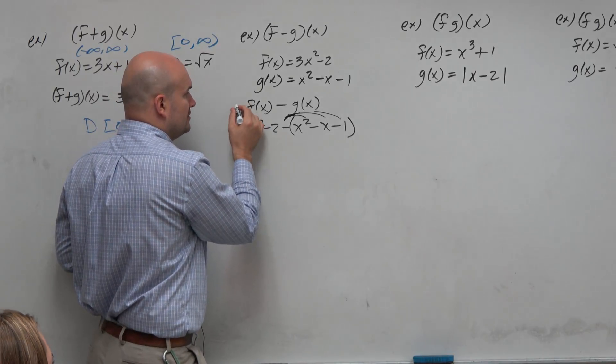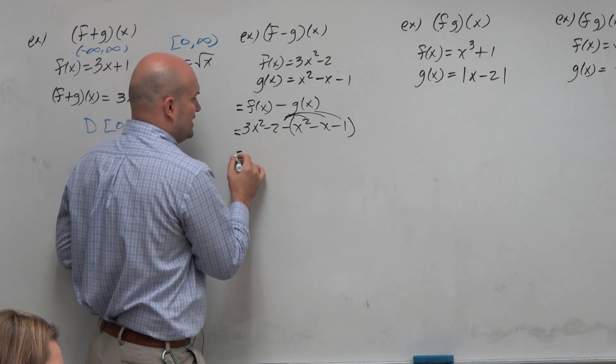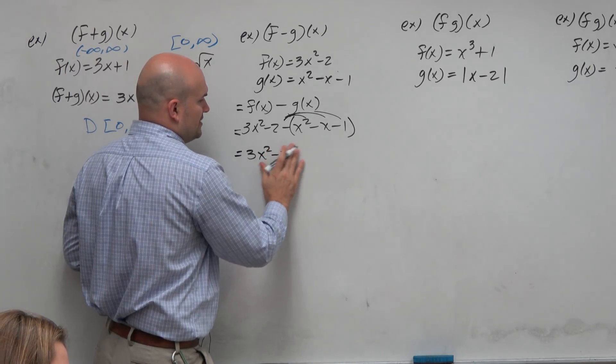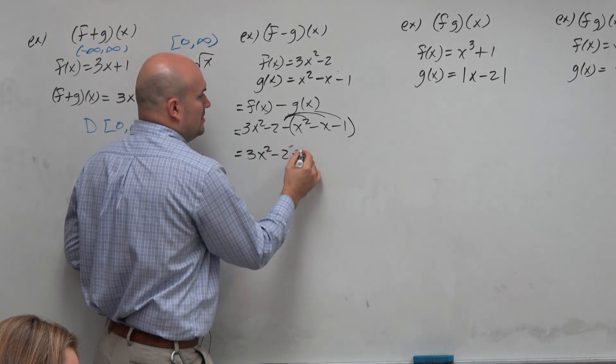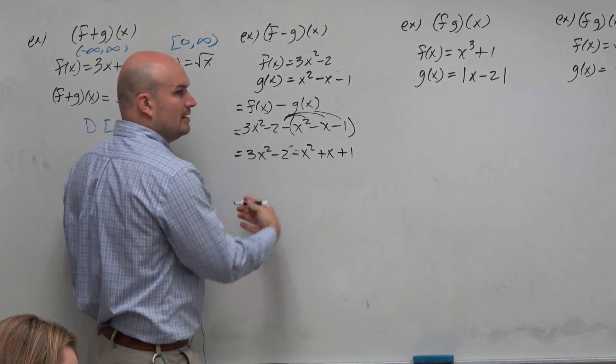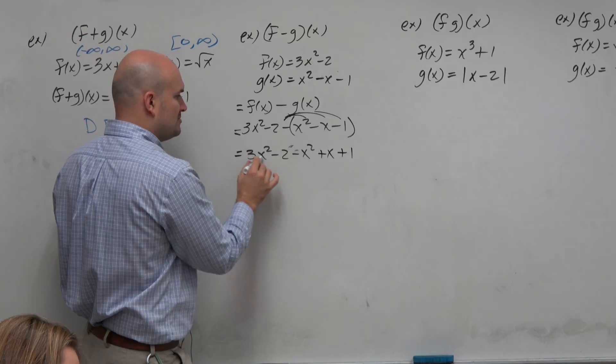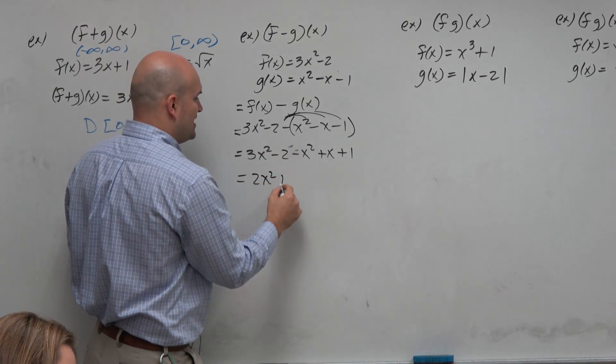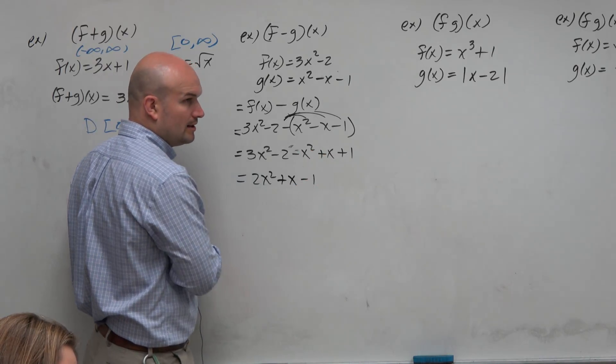So really what we're doing is we're taking 3x squared minus x squared. I'm sorry, 3x minus 2 minus x squared plus x plus 1. And now we can just go ahead and rewrite our terms. 3x squared minus x squared is going to be 2x squared. We have positive x. Negative 2 plus 1 is a negative 1.